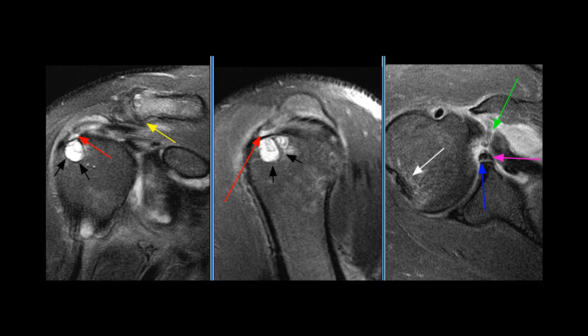This case is a 58-year-old male with issue of shoulder pain and weakness. MRI examination of the right shoulder.